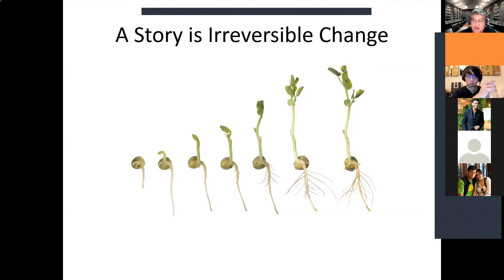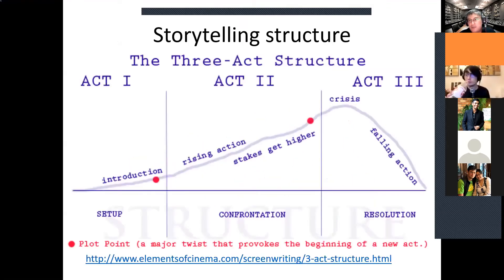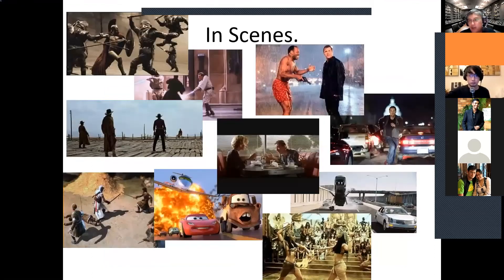A story is irreversible change. A story told on its own can be very boring, but as long as you put it into the correct narrative structure — in this case the three-act structure — your story will generally be about two main characters: the hero, the protagonist, and the antagonist. You'll be telling that story in scenes all the way through.